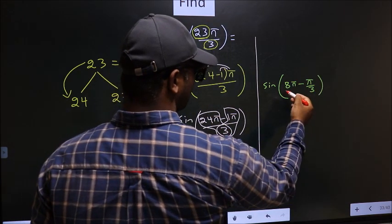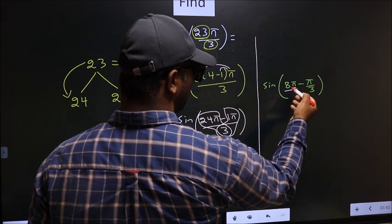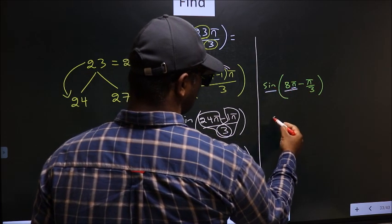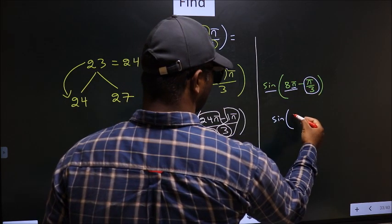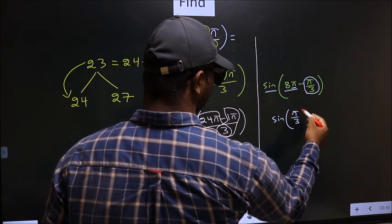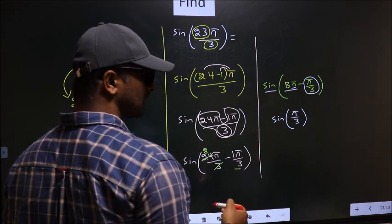Now here you have a multiple of π. So sine as it is you write. We get sine of this angle, π by 3. Now the question arises, will we get here positive or negative?